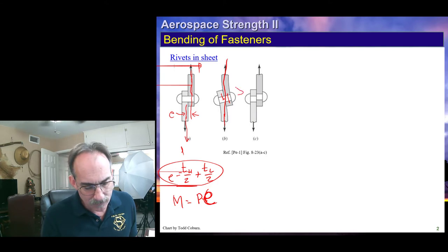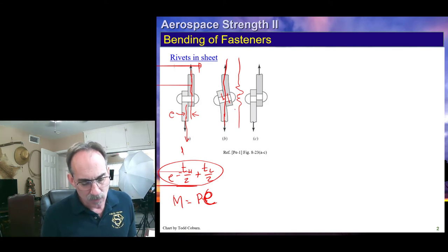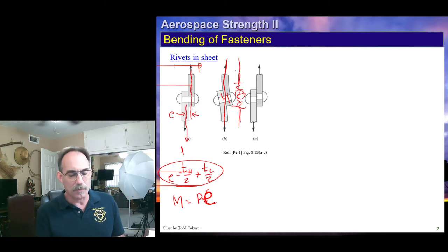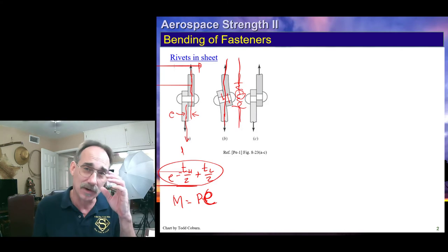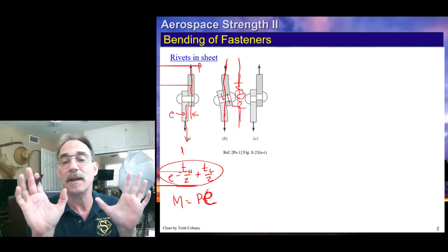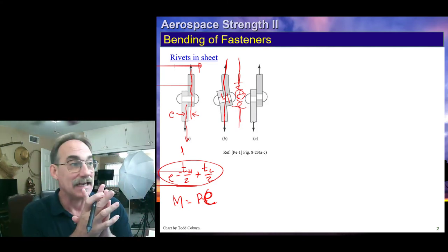You get a slight moment due to the couple between these two, but it ends up damping out. You have a little moment that dampens out within a very short distance. So the bending, as the sheet gets thinner, ends up being a tiny moment that actually dampens out in a short period of time. For some of these reasons and the idea that some of this is already accounted for in the allowables, sometimes we'll just neglect or often neglect bending.